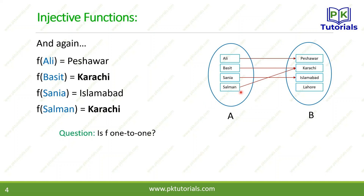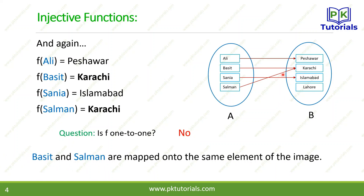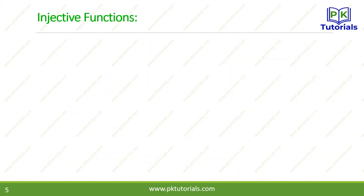Definition کے مطابق ہر element کو distinctly map ہونا چاہیے۔ جواب ہے No — کیونکہ Basid اور Salman دونوں B کے ایک ہی element یعنی Karachi کو map کر رہے ہیں۔ ان کے images same ہیں، اس لیے یہ injective یا one-to-one function نہیں ہے۔ Basid and Salman are both mapped onto the same element of the image.